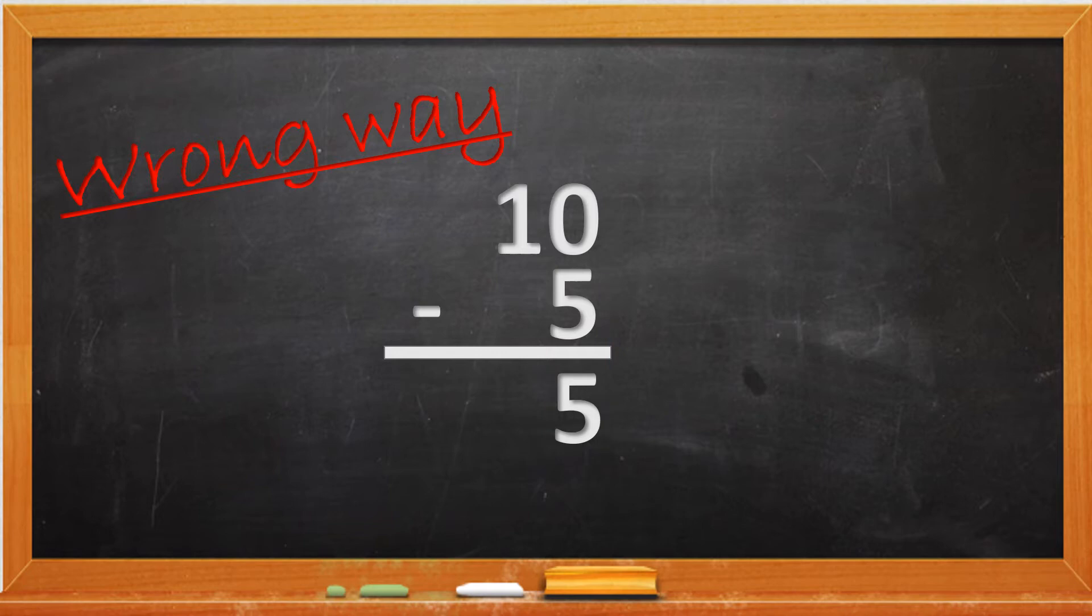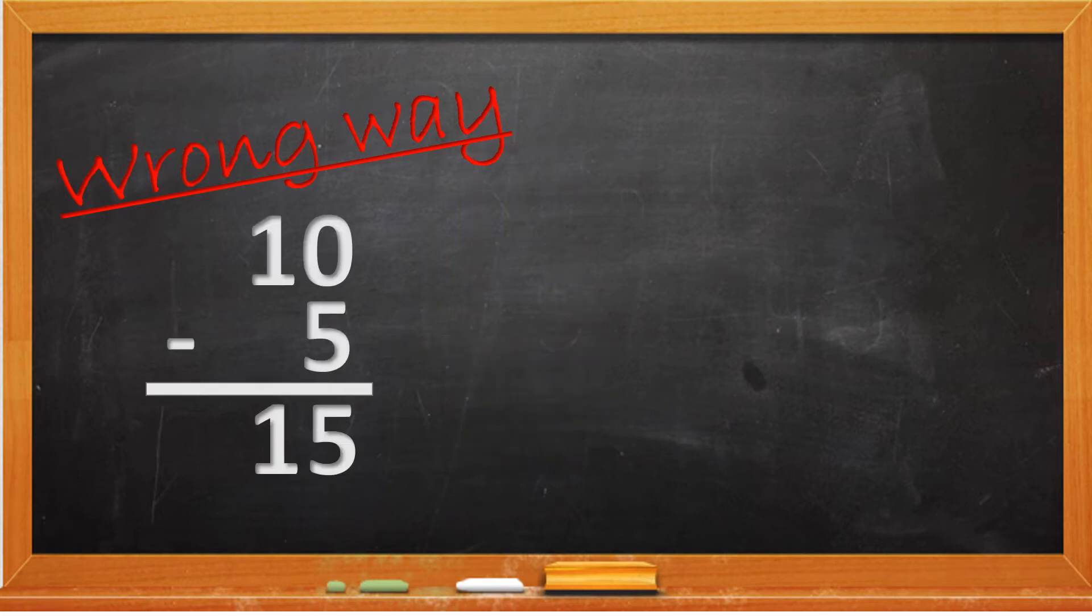Once again, this is wrong. We do not do it this way, but I'm still going to show you the wrong way so I could prove a point later on. The next thing you do is you take 1 minus nothing will be 1. And so we have an answer of 15.